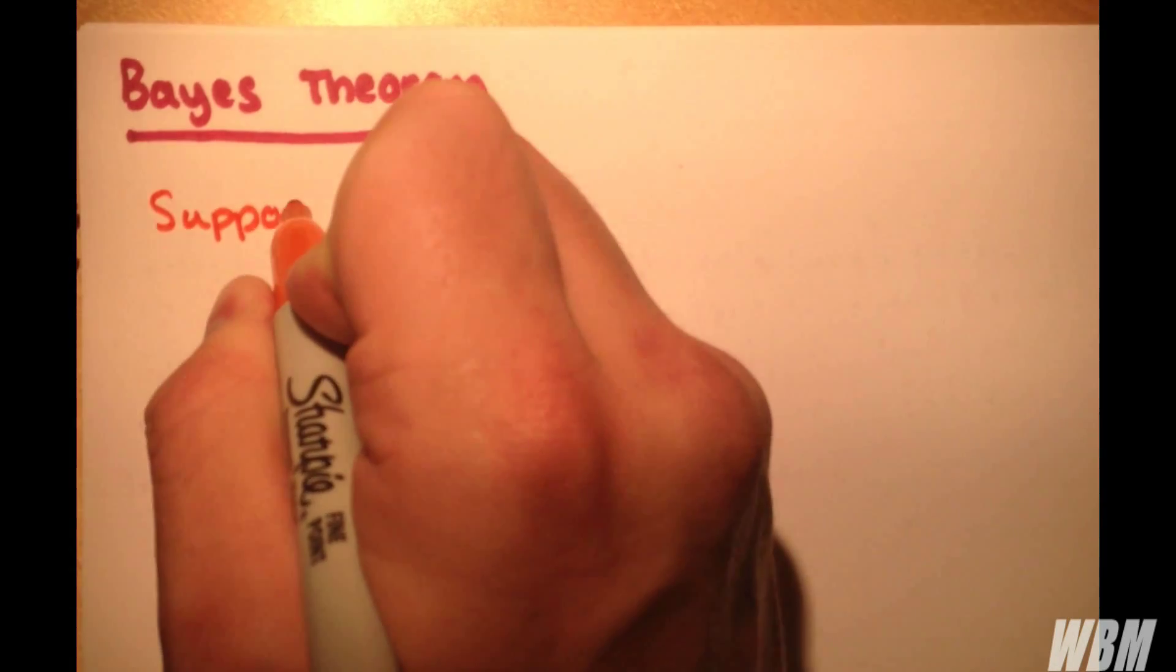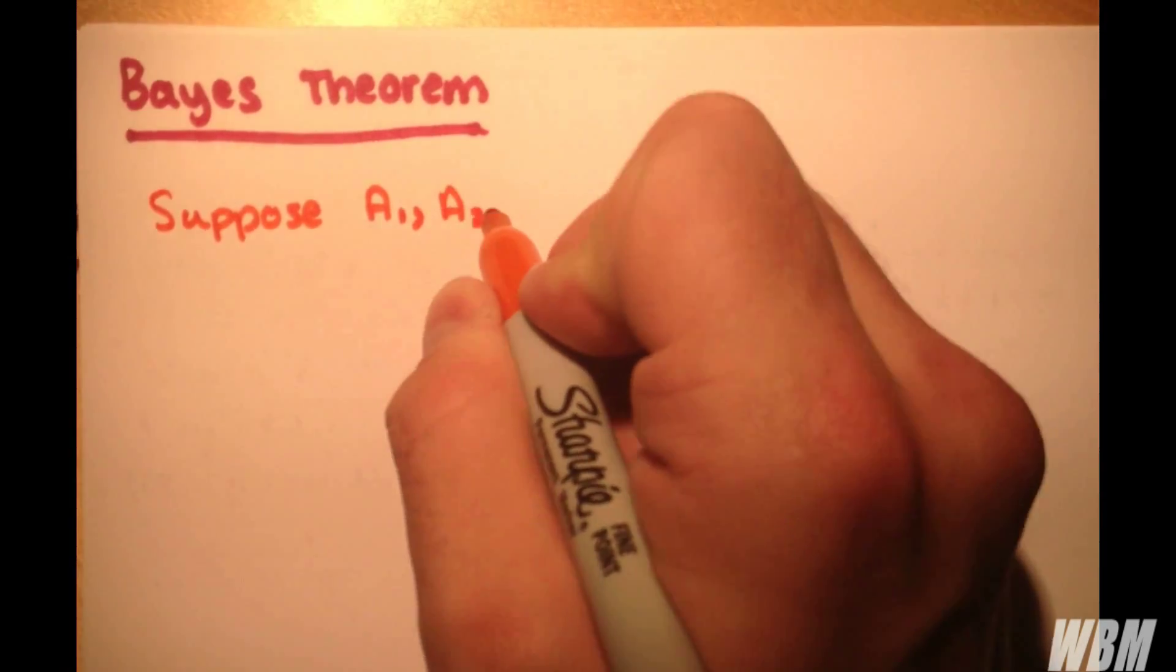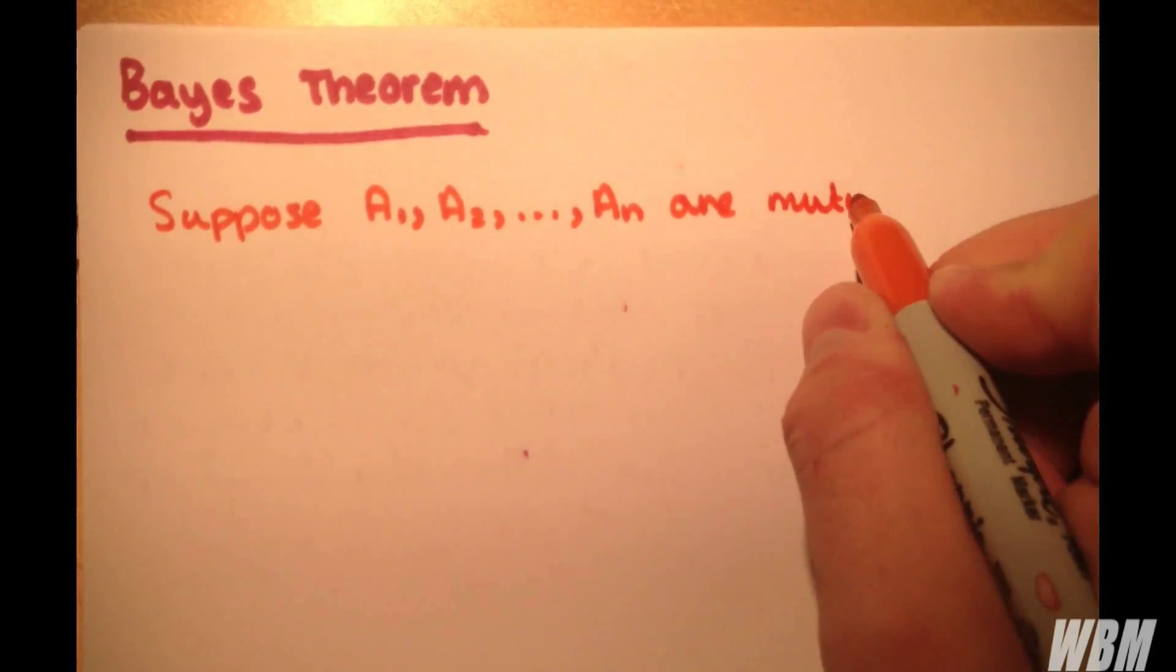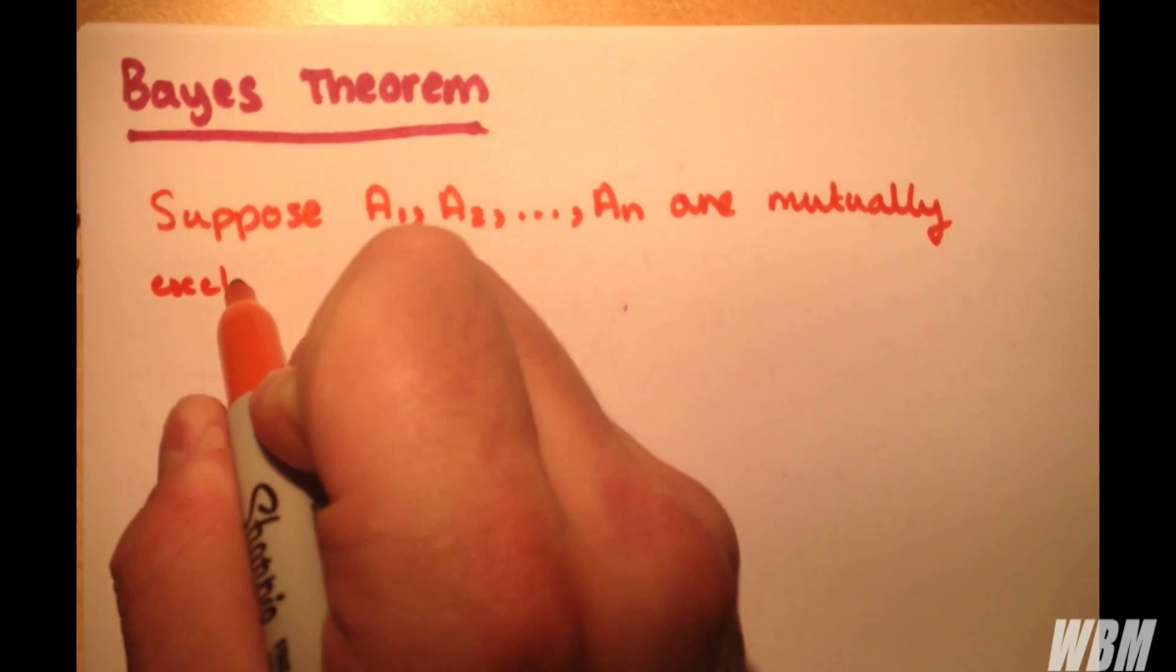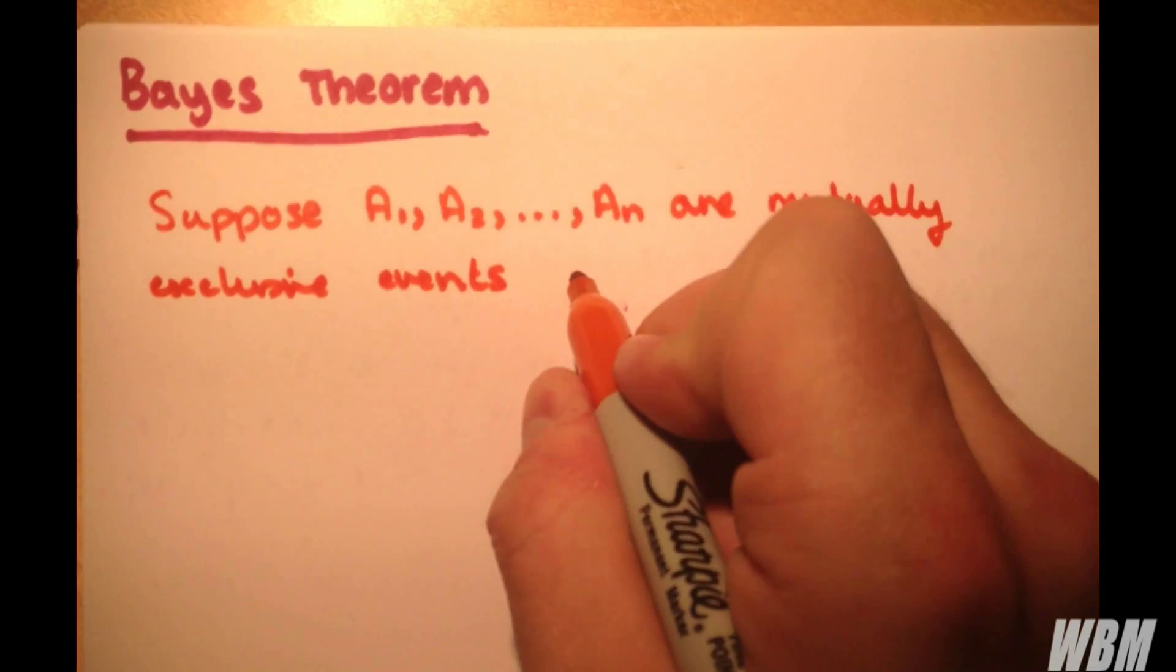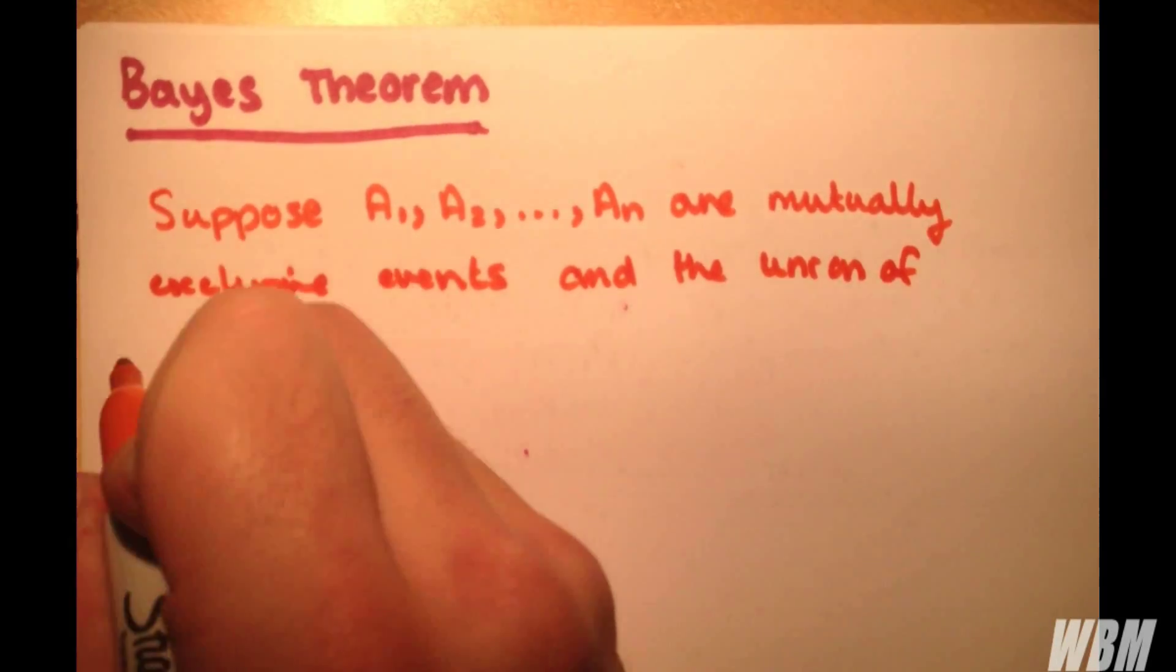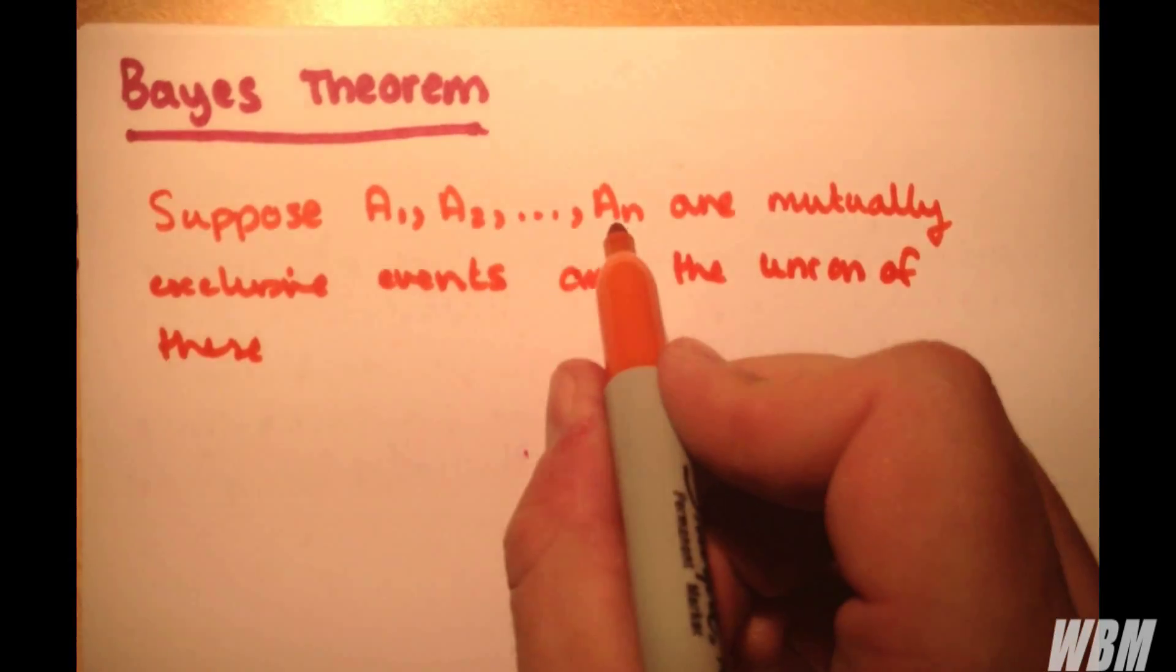So we suppose A1, A2, all the way up to An are mutually exclusive events, and that the union of these events is the entire sample space, so these are all possible events.